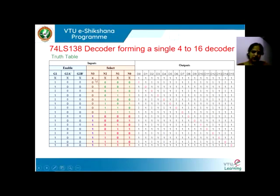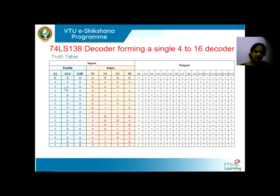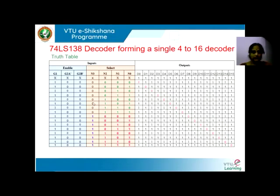The inputs will vary from 0000 to 1111. Now, if the values of G1, G2A bar, and G2B bar are 'X' — meaning any value other than the required condition — then the output remains high irrespective of the status of the inputs. Only when the correct enable condition is met will the chip be enabled.